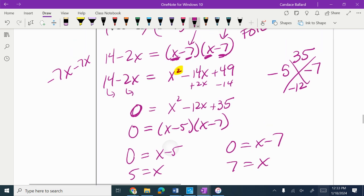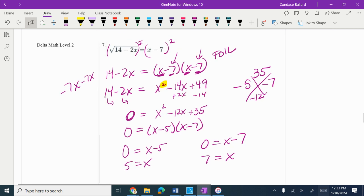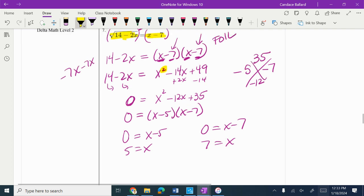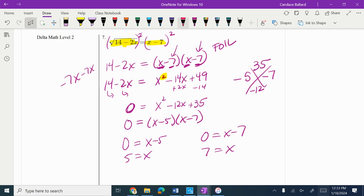However, I need to check for extraneous solutions. So I'm going to go back to the original and plug into what I just highlighted, just the part that's in yellow, not the squared part.